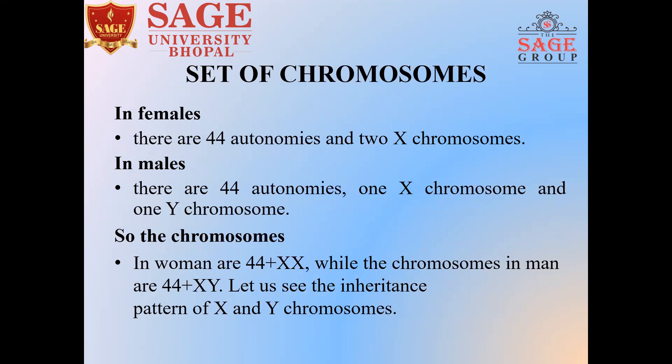We will now see the set of chromosomes. There are 44 autosomes, one X chromosome, and one Y chromosome as sex chromosomes. So the chromosome composition showing XY indicates male characteristics.